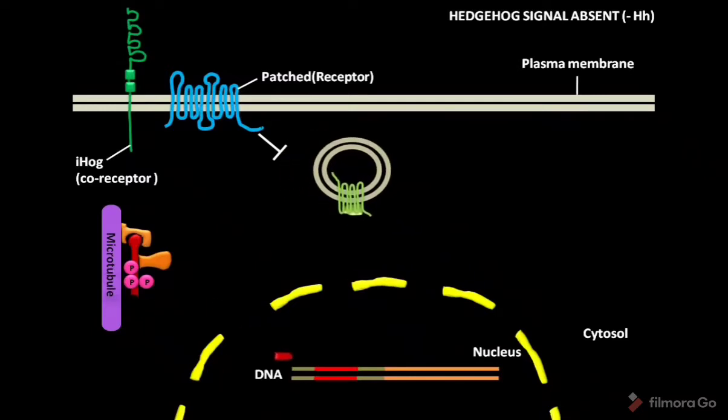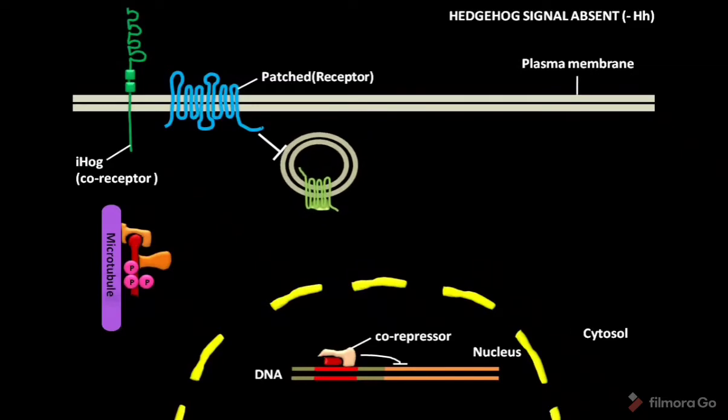In the nucleus, CI75 binds with the co-repressor to form a complex which inhibits the transcription of Hedgehog target genes. As a result, the Hedgehog target genes remain in an OFF condition.